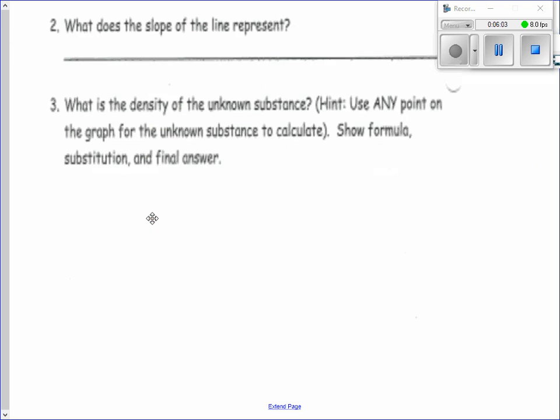What does the slope of the line represent? The slope of the line represents the density. The change in y over the change in x. So you're going to do y over x, which is mass over volume. So the change in the mass over the volume is density.